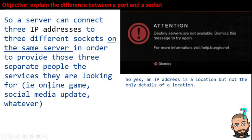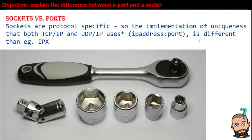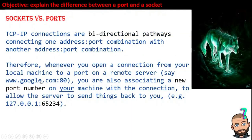We're talking about online gaming, social media updates, whatever. Fans of Destiny know that a particular image is really bad to see on your screen because it means the Destiny service servers are not available — very frustrating. So if you think about it: these ports are connected to an IP address, and those two make up a socket. The socket itself is protocol-specific. You might see it like this — DNS will figure out what the IP address is, so google.com on port 80.